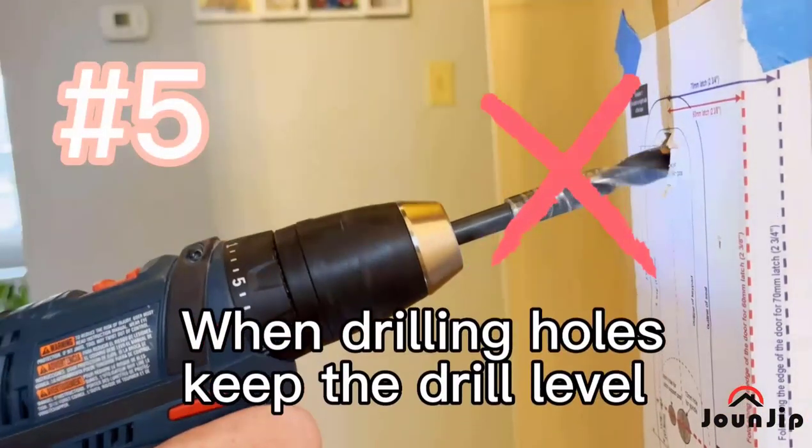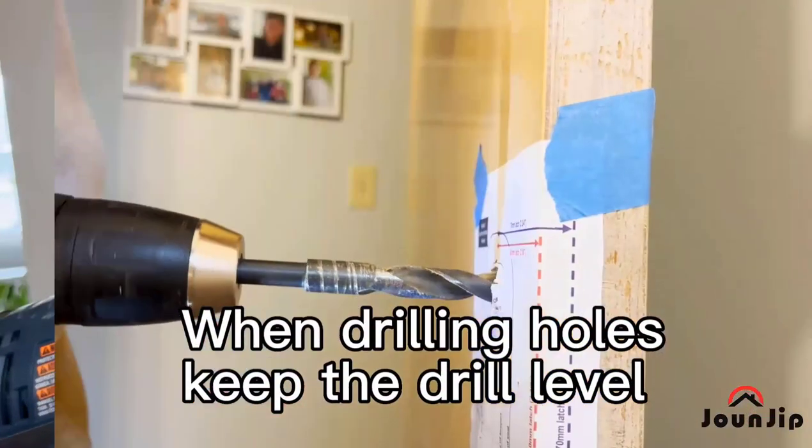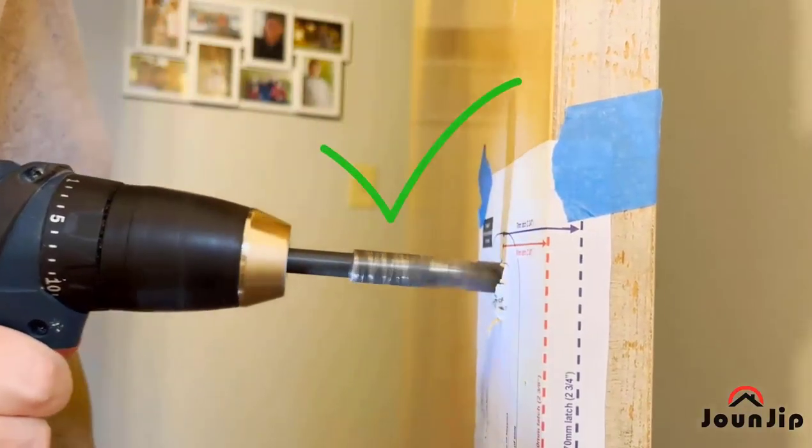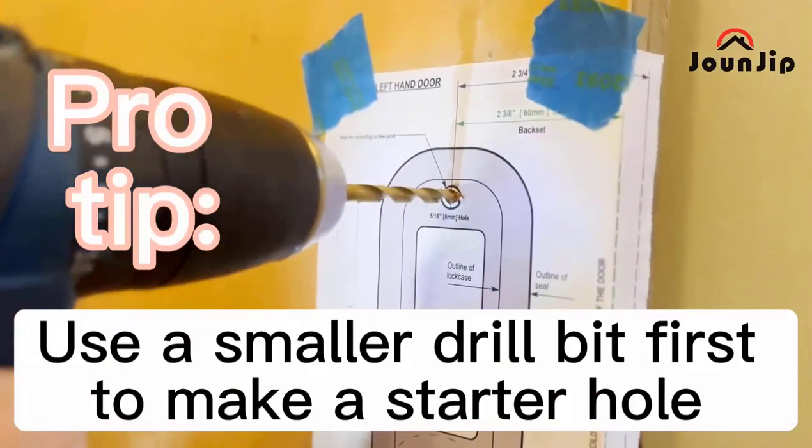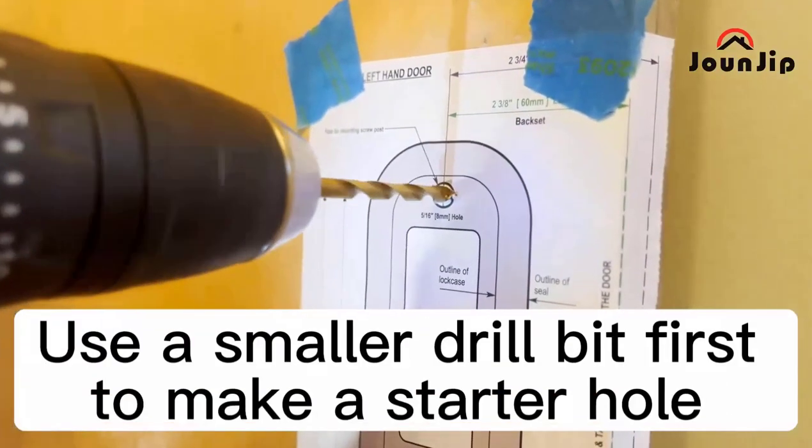Number five: when drilling holes keep the drill level. Pro tip: use a smaller drill bit first to make a starter hole.